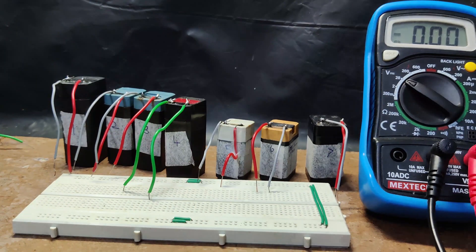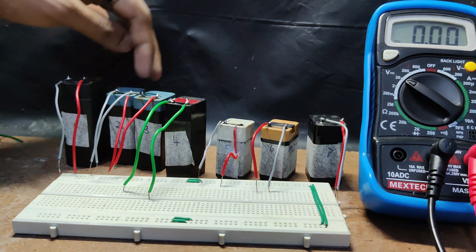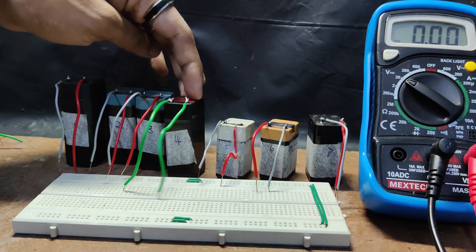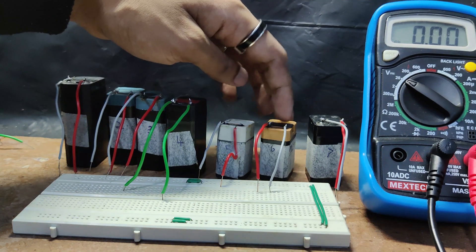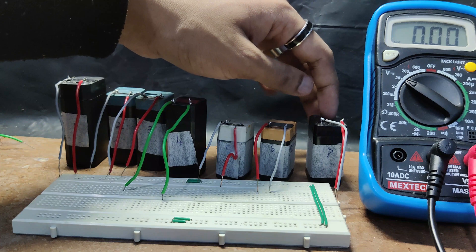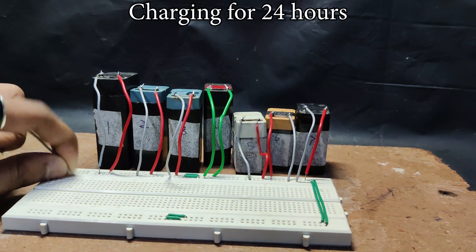We can add drops of water corresponding to their increase in voltage. Let us add 25 drops in battery 1, 20 drops in battery 2, 10 drops in battery 3, 10 drops in battery 4, 20 drops in battery 5, 10 drops in battery 6, and 20 drops in battery 7. After adding distilled water, let us charge the battery for 24 hours.